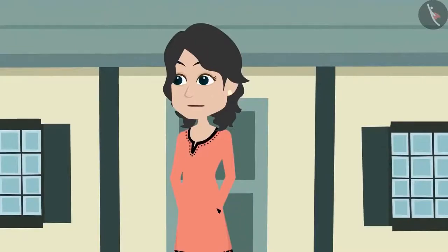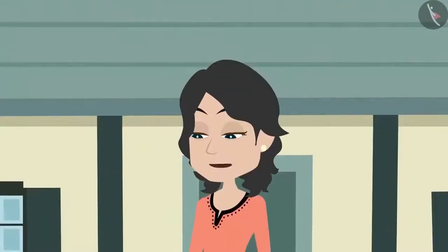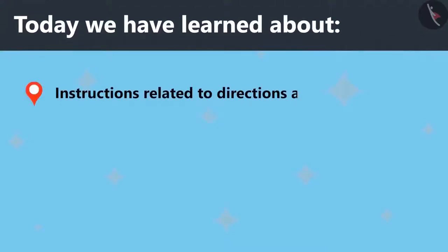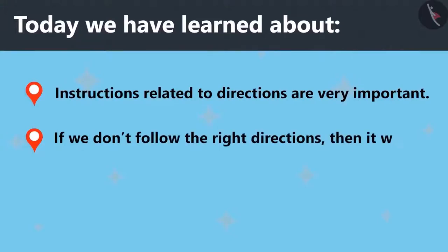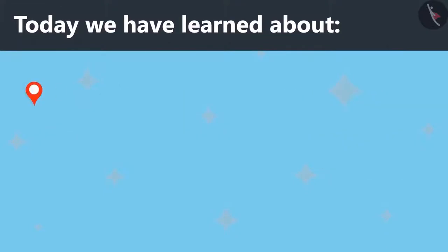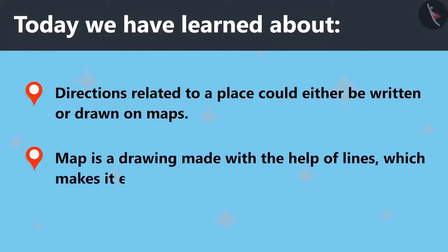Maps are not only for cities, but also for every state, country and even the world, in which oceans, mountains and rivers are marked. If we talk about maps, it will take hours. But right now, let us enjoy the party and we will talk about it some other day. Today we have learned that instructions related to directions are very important. If we don't follow the right directions, then it will be difficult for us to reach from one place to another. Directions related to a place could either be written or drawn on maps. A map is a drawing made with the help of lines, which makes it easy to reach different places.